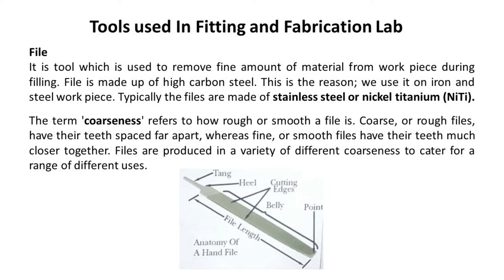The term coarseness refers to how rough or smooth a file is. Coarse or rough files have their teeth spaced far apart, whereas fine or smooth files have their teeth much closer together. Files are produced in a variety of different coarseness levels to cater for a range of different uses.